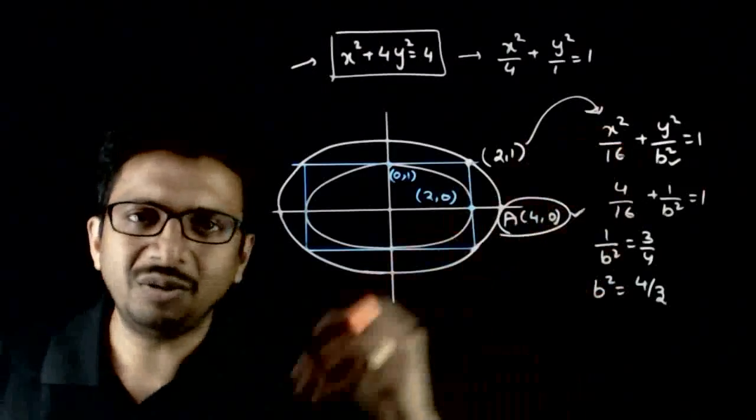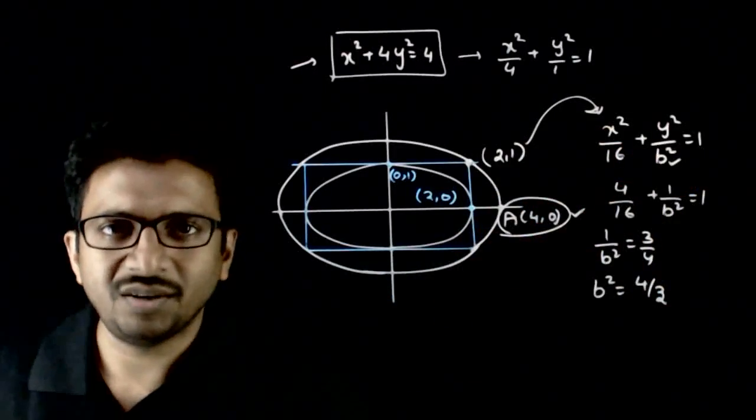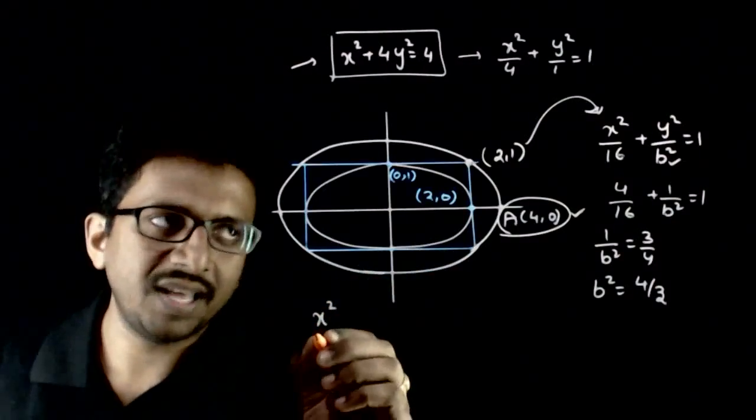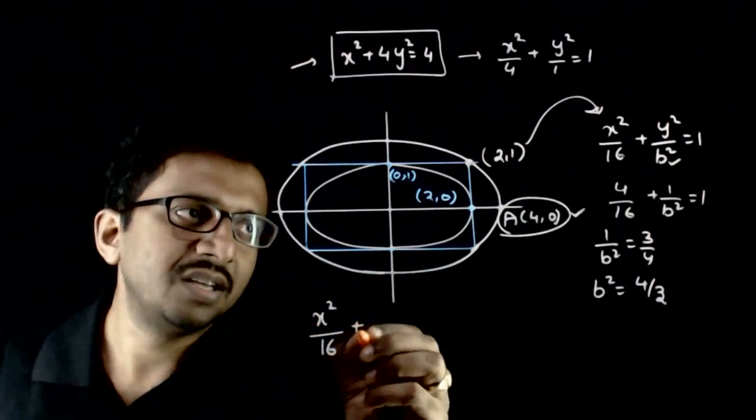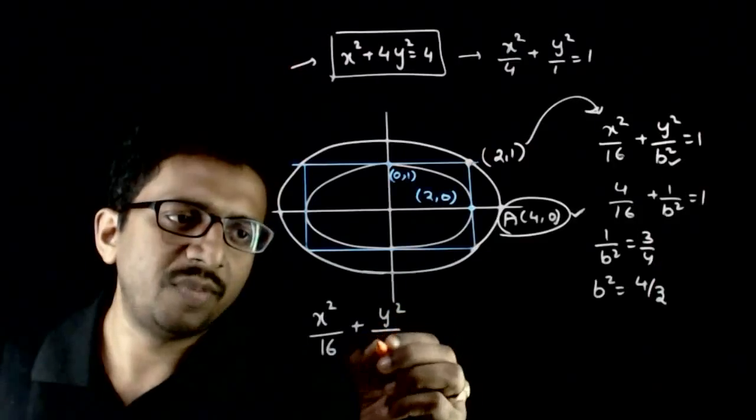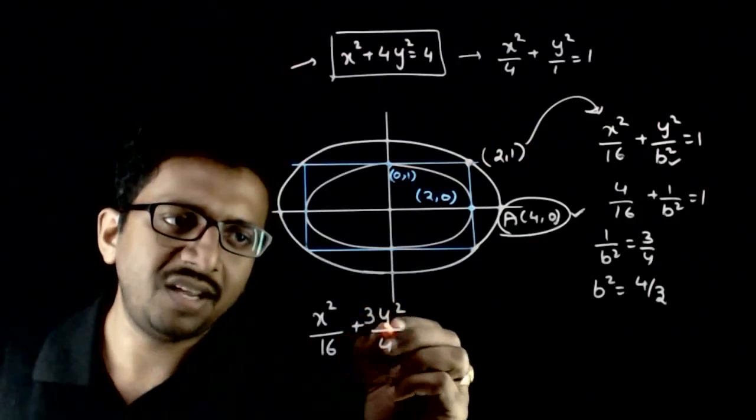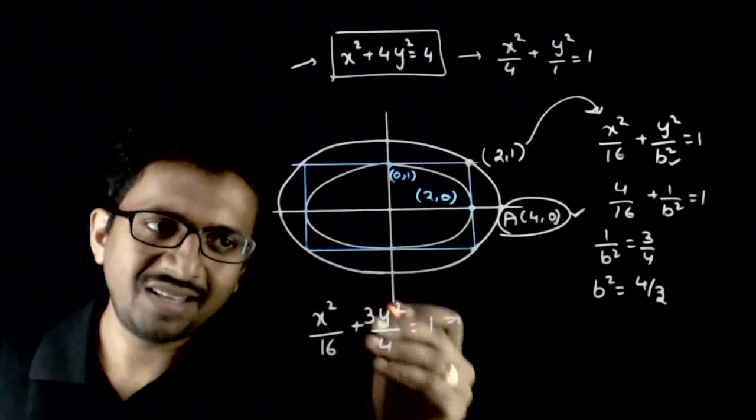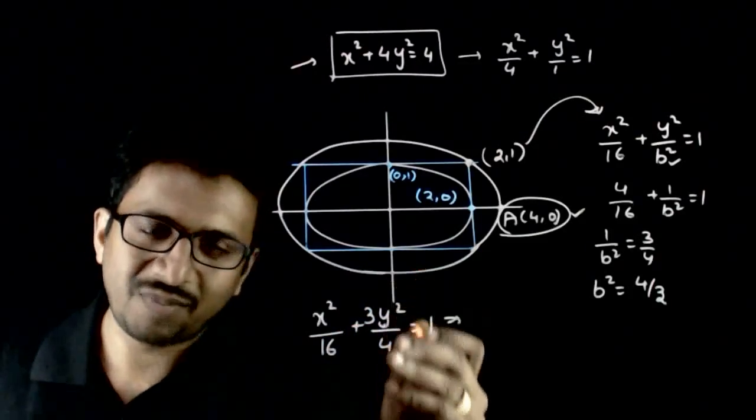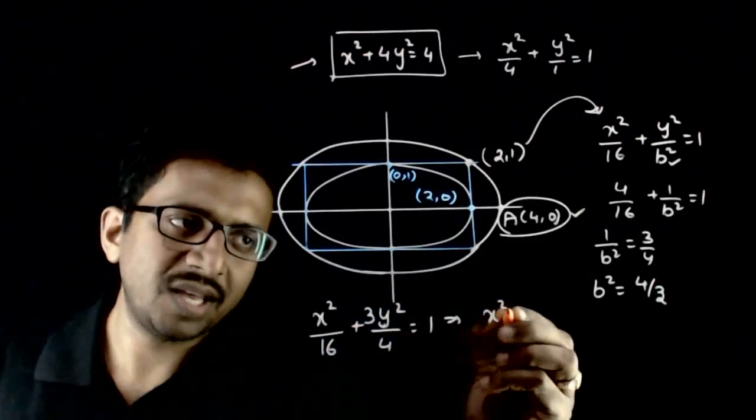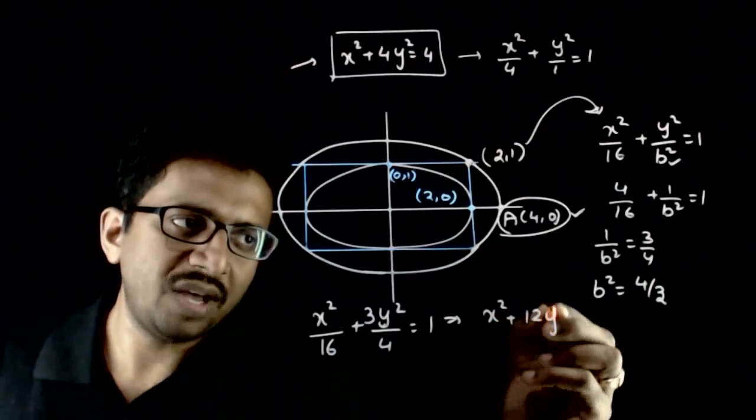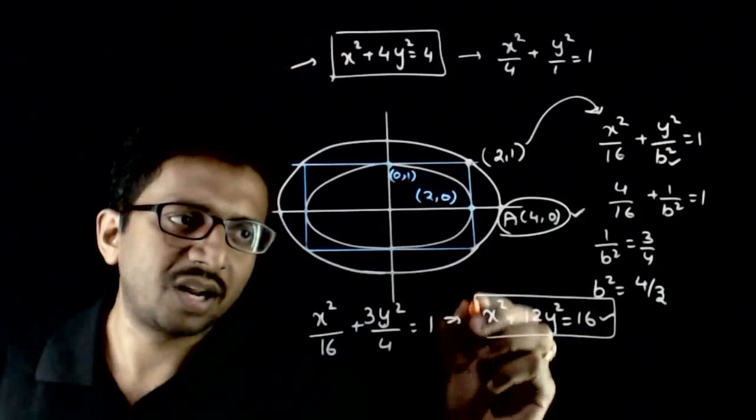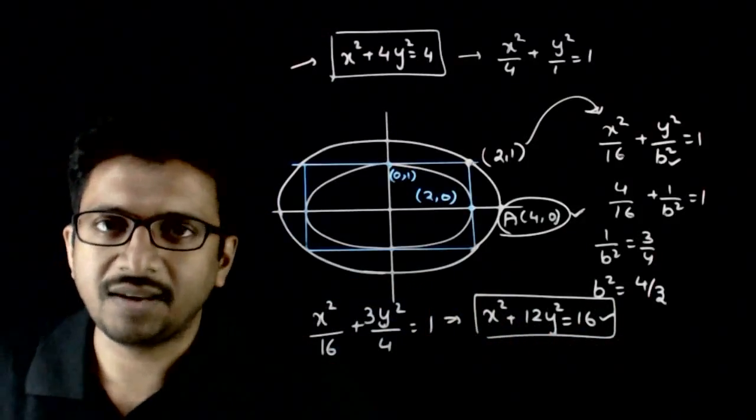Now, once you have this, you just need to plug in this b² into this equation. So the equation of the required ellipse is x²/16 + y²/(4/3), 3 goes up, is equal to 1. So if I take the LCM, we can multiply this with 4. So x² + 12y² = 16. This will be the required equation of the final ellipse.